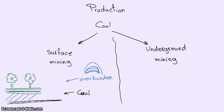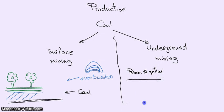The other type of mining is underground mining. And there are several methods for underground mining. One of them is the room and pillar method, and it's used when the coal is very deep underground.